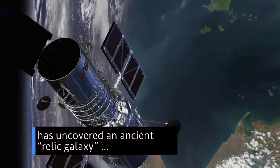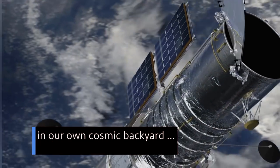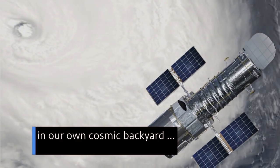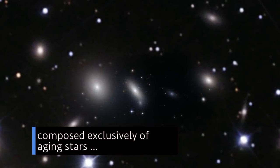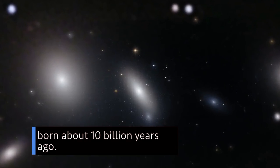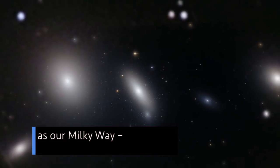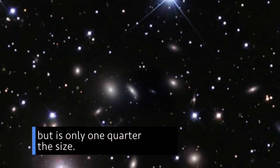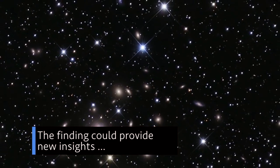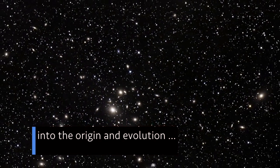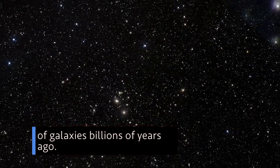Our Hubble Space Telescope has uncovered an ancient relic galaxy in our own cosmic backyard, composed exclusively of aging stars born about 10 billion years ago. The galaxy NGC-1277 has twice as many stars as our Milky Way, but is only one-quarter the size. The finding could provide new insights into the origin and evolution of galaxies billions of years ago.